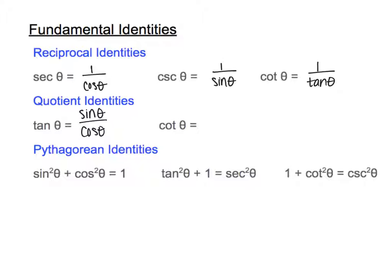Cotangent is the opposite — cosine on top and sine in the bottom. Then there are the Pythagorean identities: sine squared plus cosine squared equals 1; tangent squared plus 1 is secant squared; and 1 plus cotangent squared is cosecant squared. All of these can be proven using a triangle on the unit circle, but we're going to learn how to use these identities to verify and simplify trig expressions.